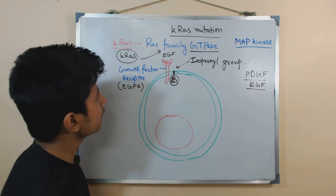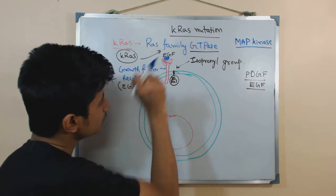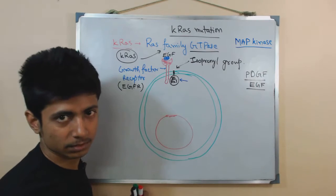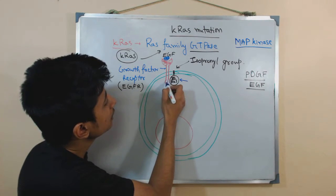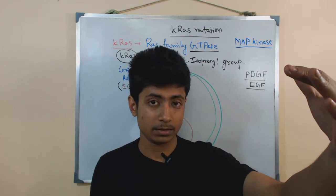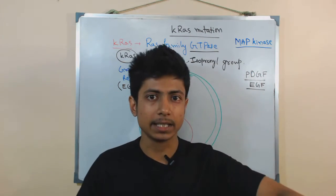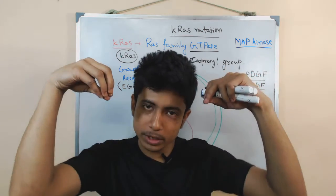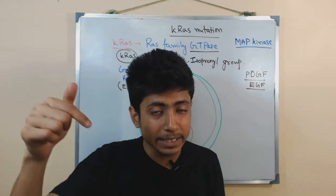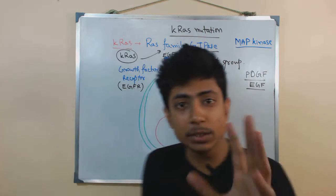EGF or the growth factor will come and attach to this receptor. Once it attaches, it provides the signaling — and here comes the importance of KRAS. The RAS will come and attach with the cytoplasmic section of the receptor and receive the signal, because the signal is outside the cell and we need to act inside. Someone must take the signal from outside and bring it inside. Once the signal molecule is inside the cell, the rest of the signaling pathway proceeds in the cytosol and is conveyed to the nucleus, which decides to act on that signal.